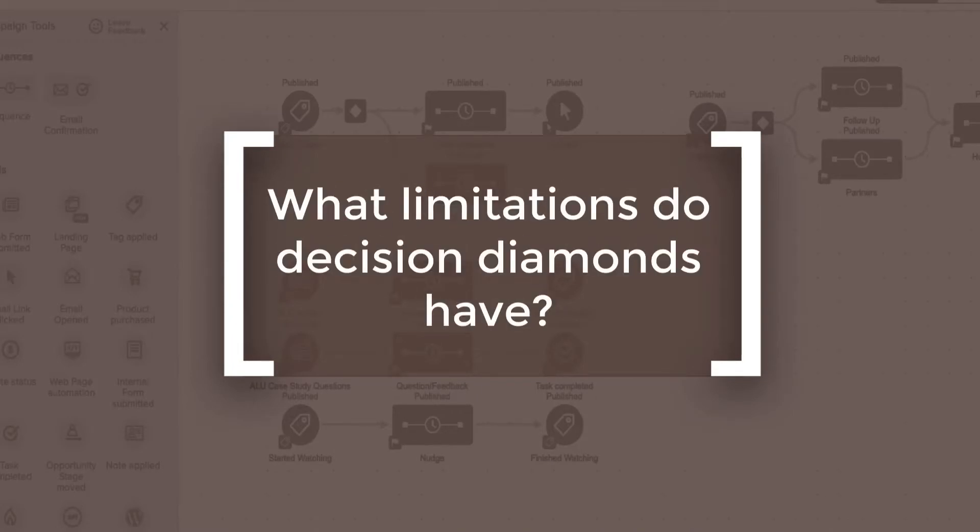Question number four: what limitations are there? One I just mentioned — form data is only accessible immediately after the form, so where your decision diamond takes place makes a difference. Another limitation is that because of the heavy emphasis on contact data, we don't get access to other record types like order records, opportunity records, or referral partner records when building rules. The workaround is to apply a tag when somebody makes a purchase or when an opportunity moves to a specific stage, and then use those tags in your rules.